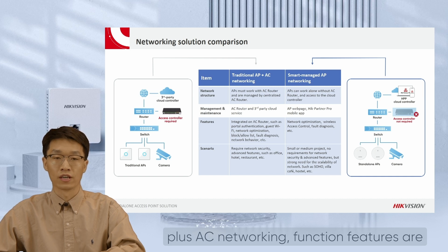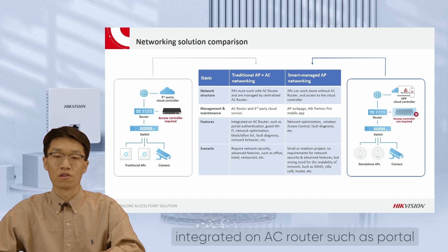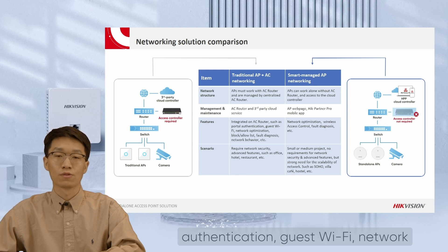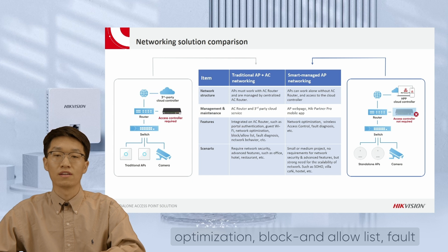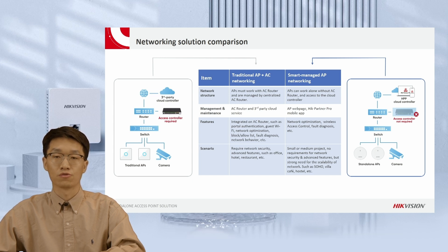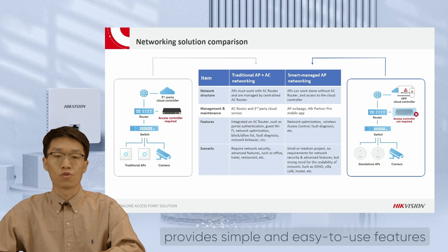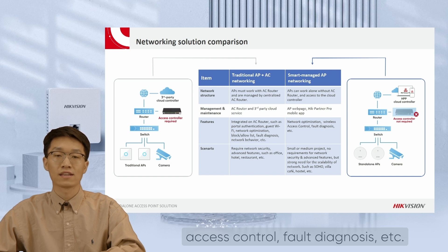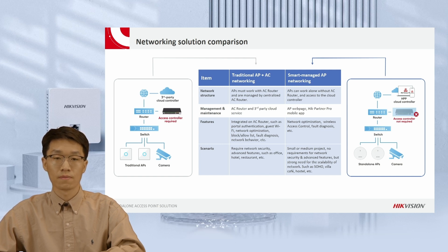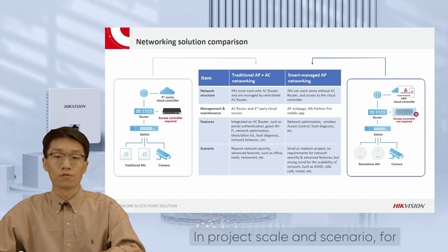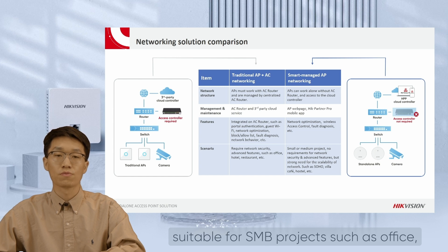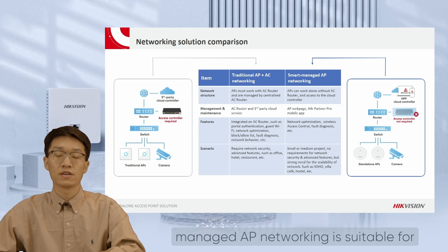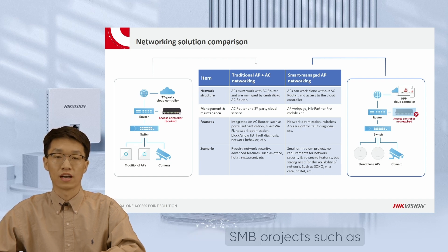In function features, for traditional AP plus AC networking, features are integrated on the AC router, such as portal authentication, guest Wi-Fi, network optimization, block list, fault diagnosis, network behavior, etc.; whereas our Smart Managed AP networking provides simple and easy-to-use features like network optimization, wireless access control, fault diagnosis, etc. In project scale and scenario, traditional AP plus AC networking is suitable for SMB projects such as office, hotel, and restaurant; while our Smart Managed AP networking is suitable for SMB projects such as SOHO, villa, cafe, hostel, etc.